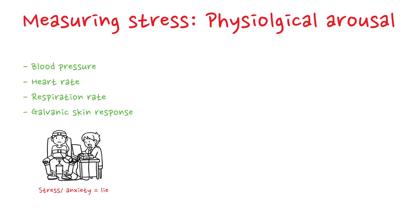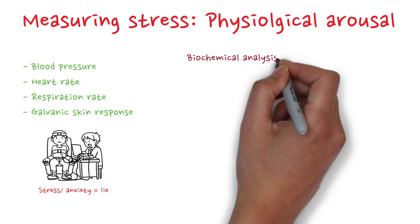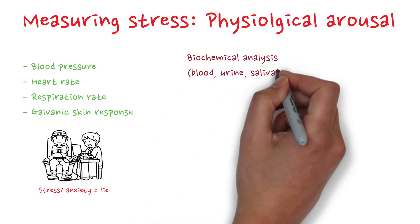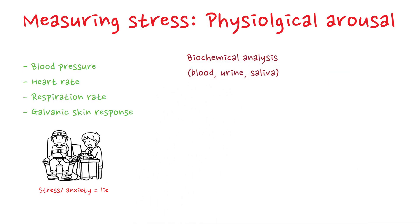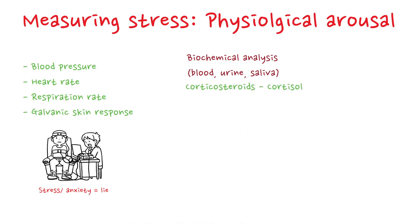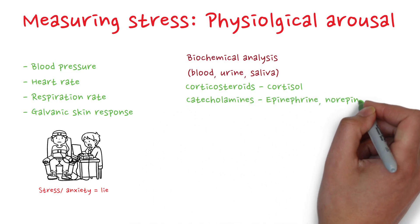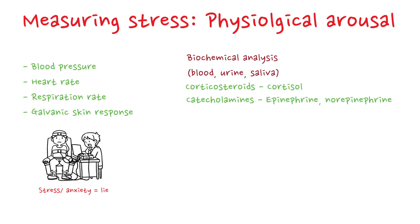Another way to measure arousal is to do biochemical analysis of blood, urine, or saliva samples. The level of hormones that the adrenal glands secrete during stress are measured. Usually the hormones measured are corticosteroids — cortisol being the most important one — and catecholamines, which include epinephrine and norepinephrine.